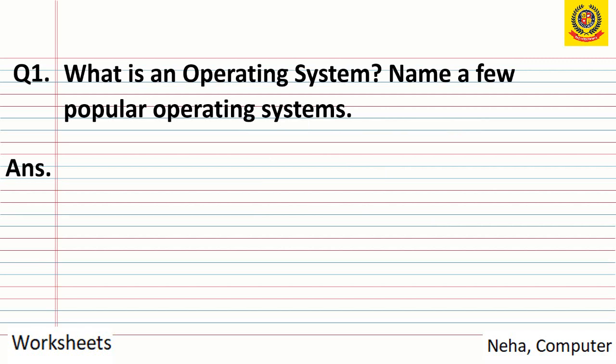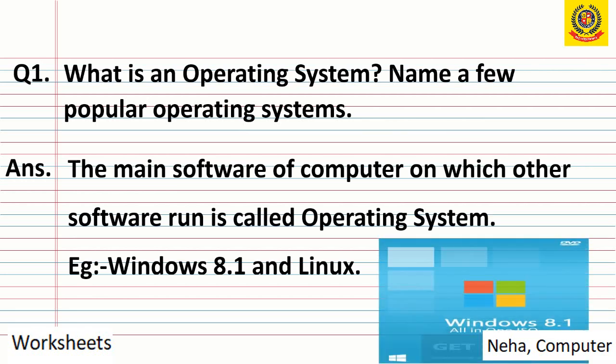Question 1: What is an operating system? Name a few popular operating systems. The answer is: the main software of a computer on which other software runs is called an operating system. Examples are Windows 8.1 and Linux. So the operating system is the main software on which different software runs — like Paint, WordPad, Microsoft Word, or music players. All these software run on the main software, that is the operating system.